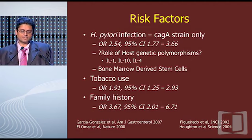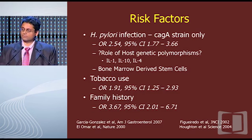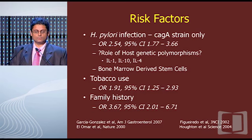The CAG-A strain gives you a risk of about 2.5, but there's also important information about host genetic polymorphisms. Polymorphisms in IL-4 and IL-1 will also increase your risk of gastric cancer. The concept is that if your immune response to having a chronic H. pylori infection is significant or high, you may develop a chronic inflammatory state which then promotes development of the disease.